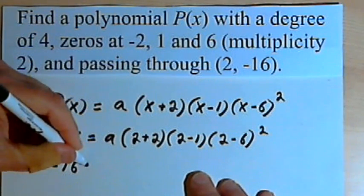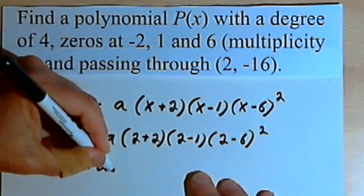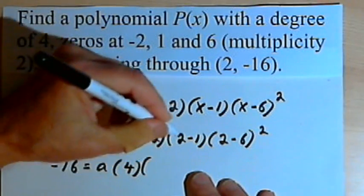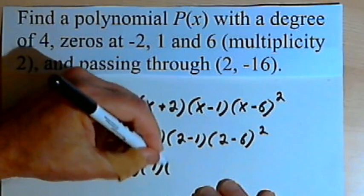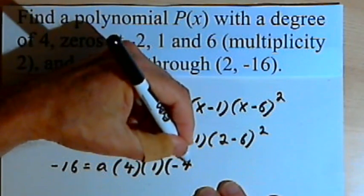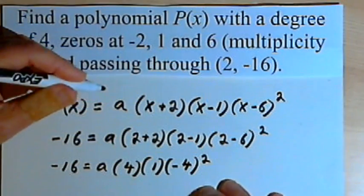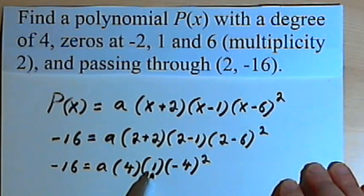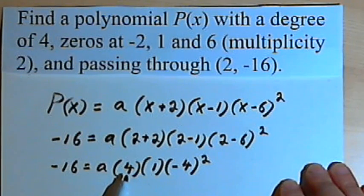So negative 16 equals a times 2 plus 2 is 4, 2 minus 1 is 1, 2 minus 6 is negative 4. I'm going to square that. Let's start out by squaring the negative 4. That's going to be positive 16. I'll multiply it by 1, it's still 16. Multiply it by 4, and that becomes 64.